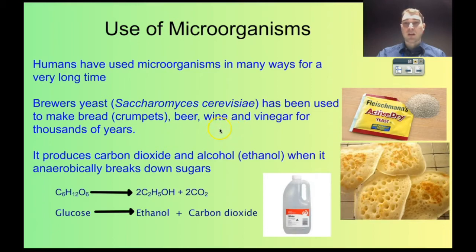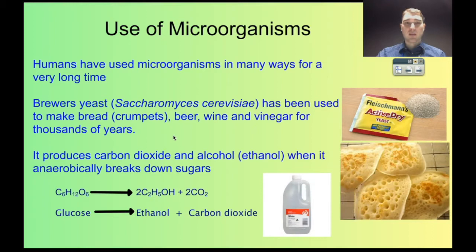This has happened for a very long time. What the yeast does is it anaerobically respires. It takes in the sugar from the starch source in the beer — so hops and wheat — or the wheat in bread. It takes in the sugar and converts that anaerobically to carbon dioxide and ethanol, which is the alcohol. Here's the equation for that: glucose gets turned into ethanol and carbon dioxide.